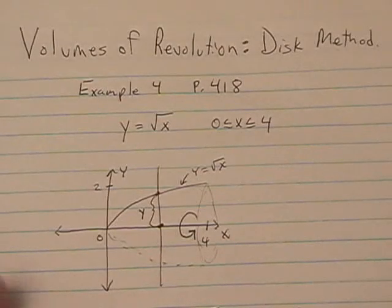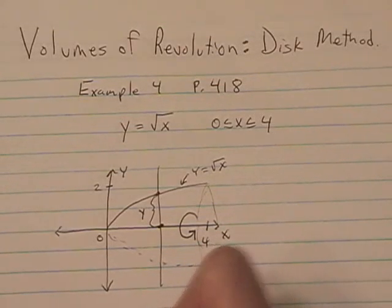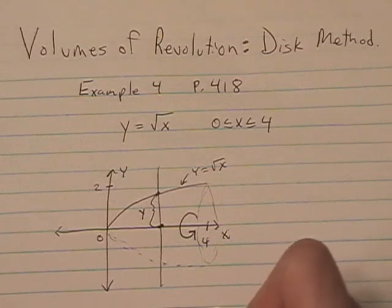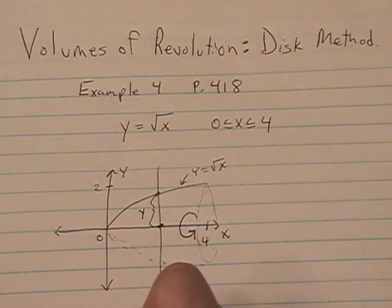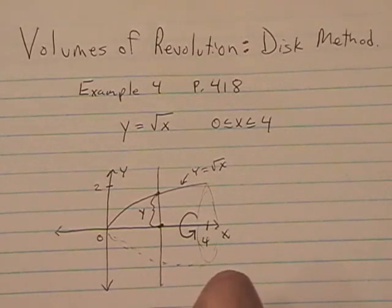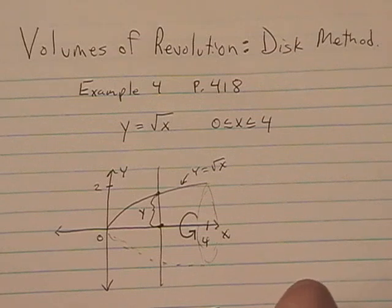Step 2 says to take that radius and square it. So r of x squared turns out to be x. And in step 3 we're going to integrate the volume. The general formula is the integral from a to b of pi times r of x squared dx.